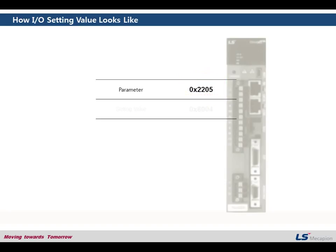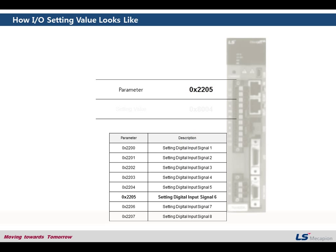In this example the parameter 2205 means the setting digital input signal 6. This parameter is to set the input signal 6 and signal 6 is one of 8 signals that you can select based on your preference. And other parameters are like this. There are 8 parameters to set 8 kinds of signals from 1 to 8.